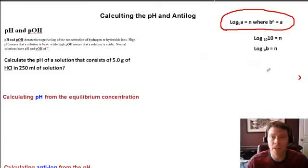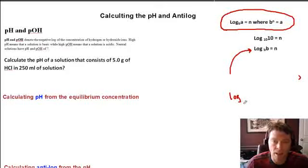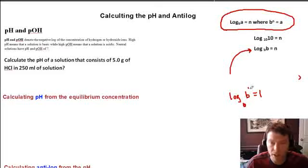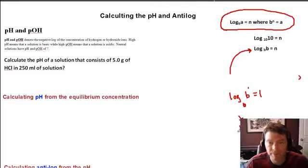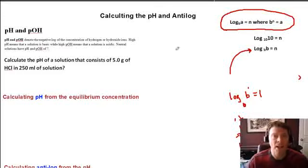The first property we'll look at: log base b of b is equal to n, and we know that n is actually 1. So log base b of b raised to the exponent 1 equals 1. This is also saying b raised to some number must equal b to the 1 — that number is 1. Since we have the same base, 1 equals 1, and that will be important with logarithmic scales.